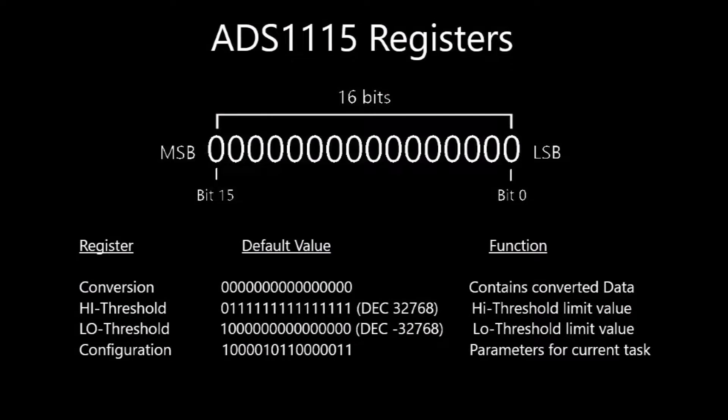The ADC contains four registers, each storing 16 bits of data, providing a total of 64 bits. When the ADS 1115 is first powered, all the registers reset to their default values and will automatically enter sleep mode without performing any conversion. This relieves systems with tight power supply requirements from encountering a surge during power up.